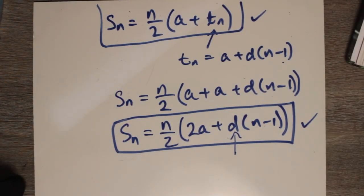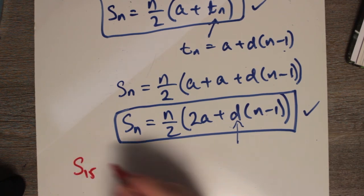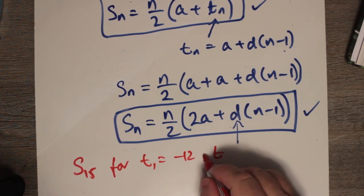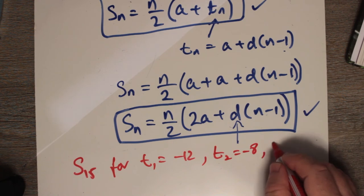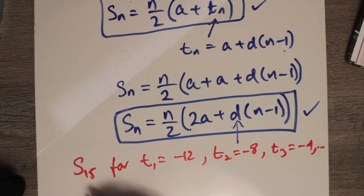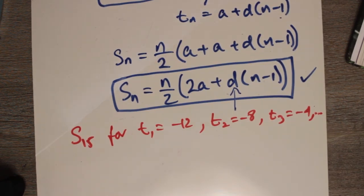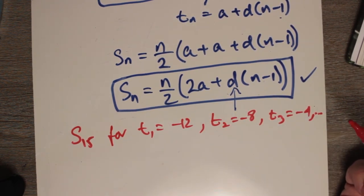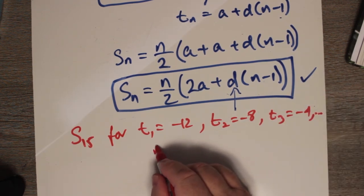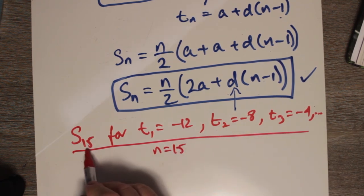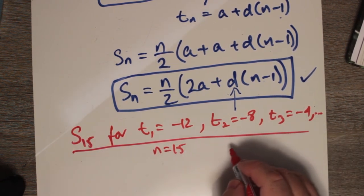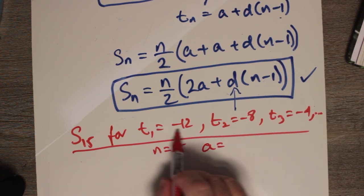Here's a sample problem. If you want to find S15 for t1 = -12, t2 = -8, t3 = -4, and so on, how can we find the sum of the first 15 terms? It looks like we need to use this formula because we're not told what the last term is. n is definitely 15 because we say S15, so n is 15. a is the first term, it's -12.